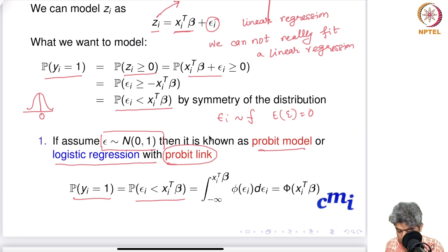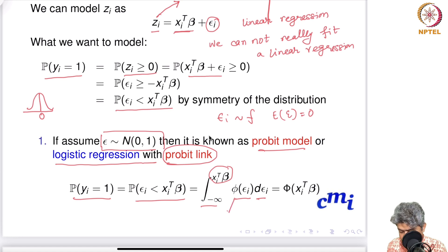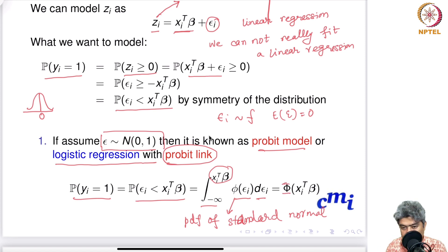In the probit model, P(yi = 1) = P(εi < xi^T β) = ∫ from −∞ to xi^T β of φ(εi) dεi, where φ is the PDF of the standard normal distribution. This equals Φ(xi^T β), where Φ is the CDF of the standard normal distribution.